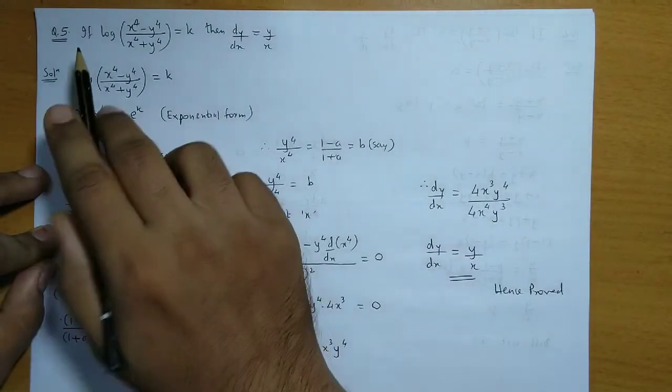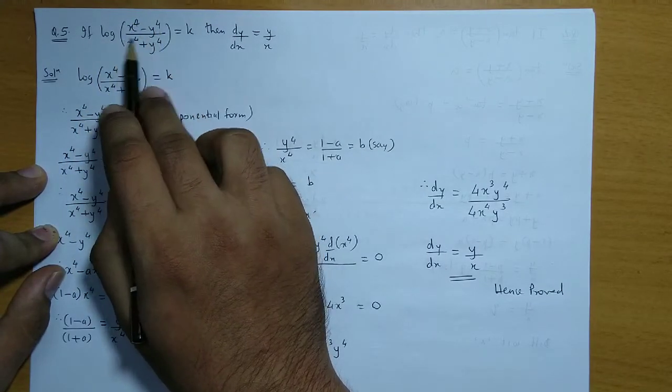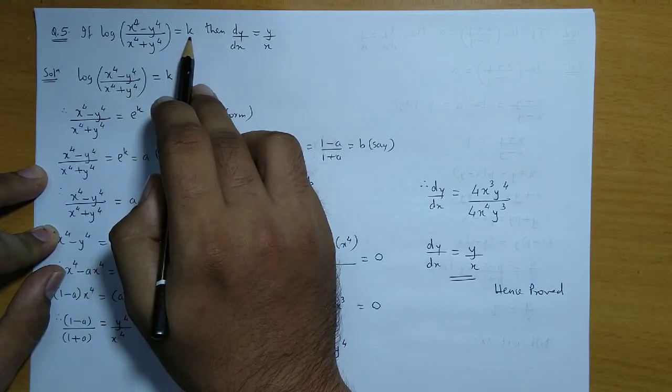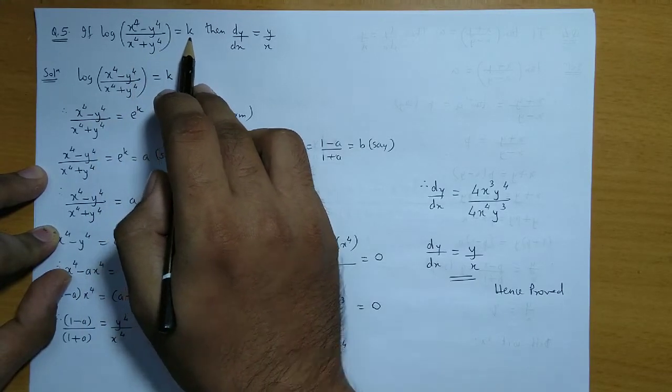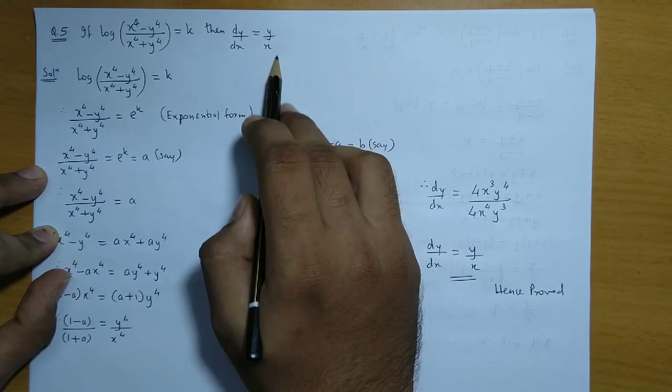Question number 5. If log of (x⁴ - y⁴)/(x⁴ + y⁴) is equal to k, then we have to show that dy/dx is equal to y/x.